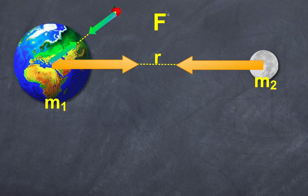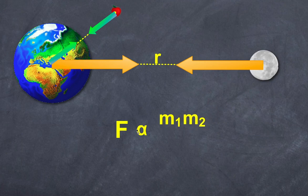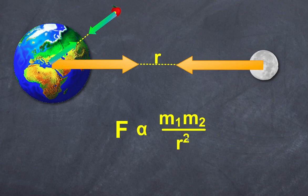What is the relationship between these variables? Newton developed the law of gravitation, which is that the force that exists between these two objects is proportional, first of all, to the product of the masses — so both m1 and m2 contribute to the force — but it is inversely proportional to not the distance between them, but the distance squared. So the combination of the product of the masses and r squared is what F is proportional to.